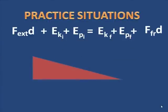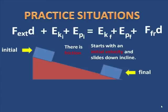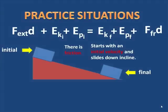Let me set up another one for you. In this particular situation, we have a block on an incline and it's going to slide down the incline again. This time there's friction, and it starts with an initial velocity. Hit pause and find the equation for this situation.